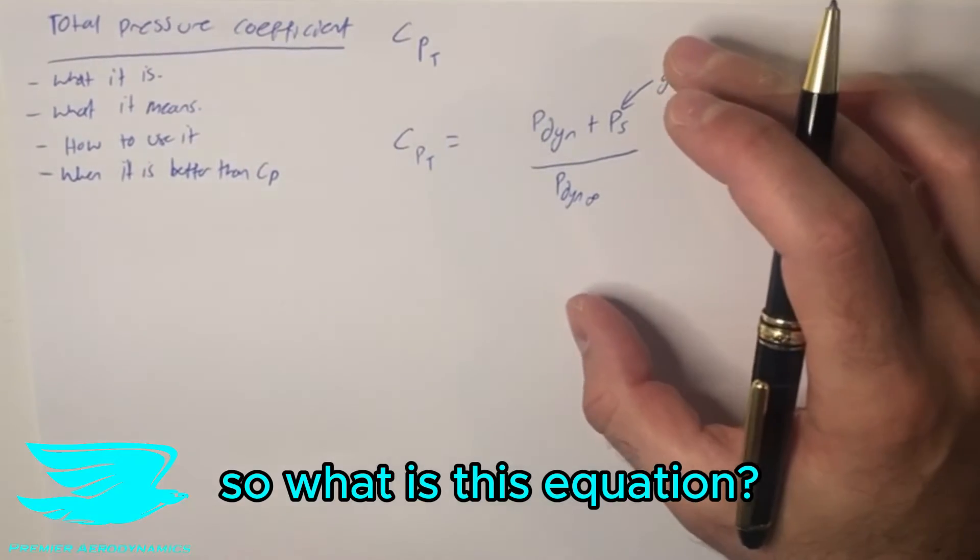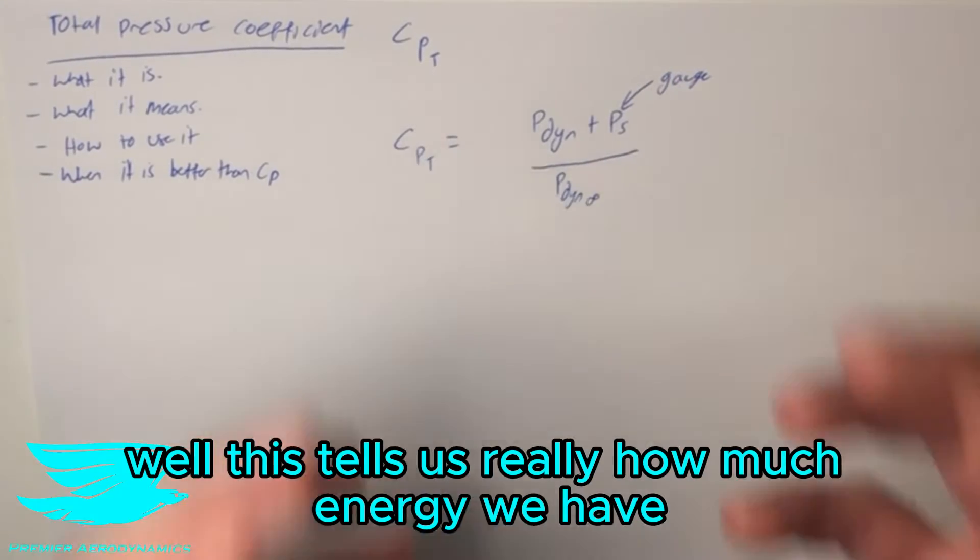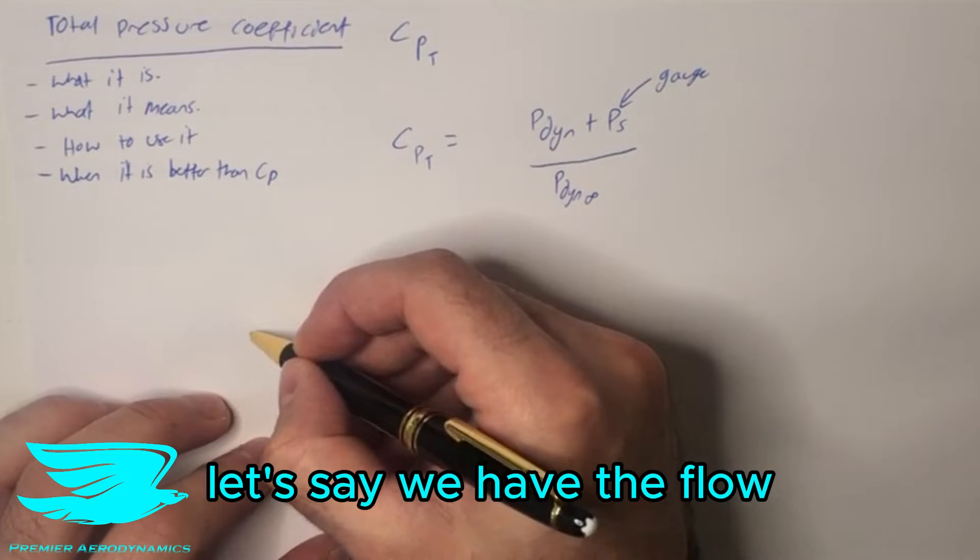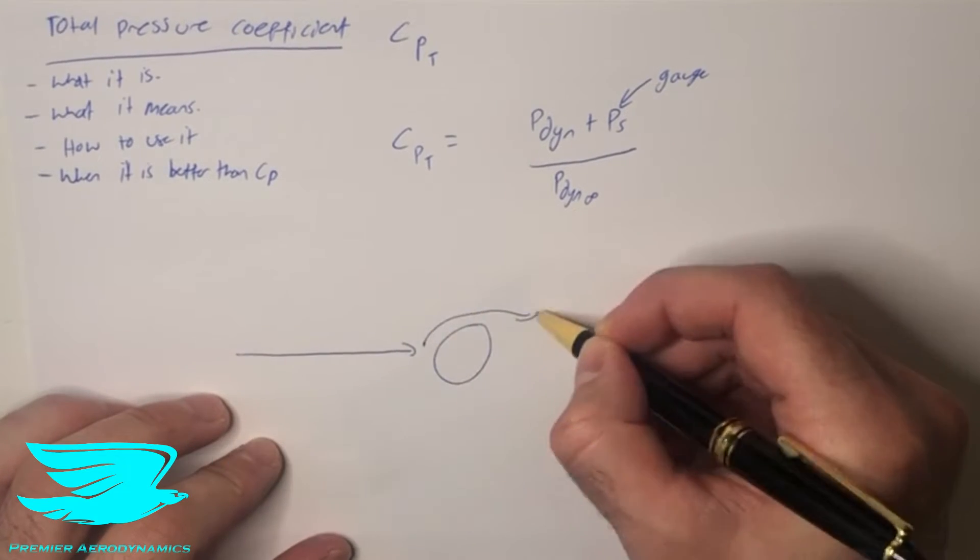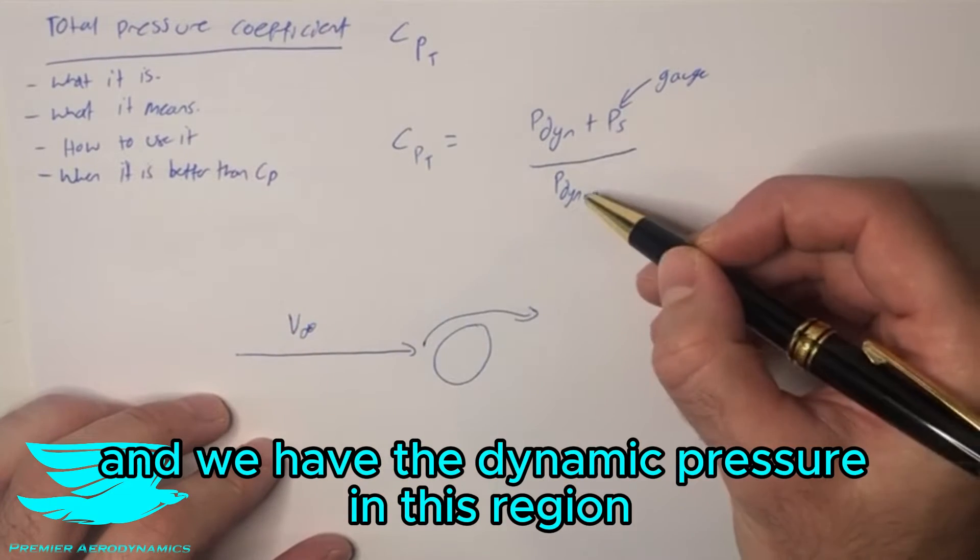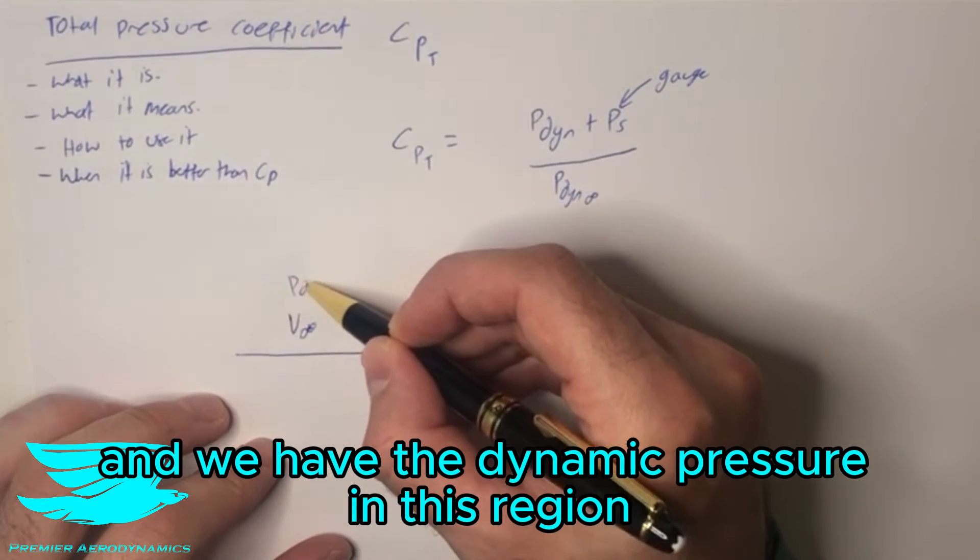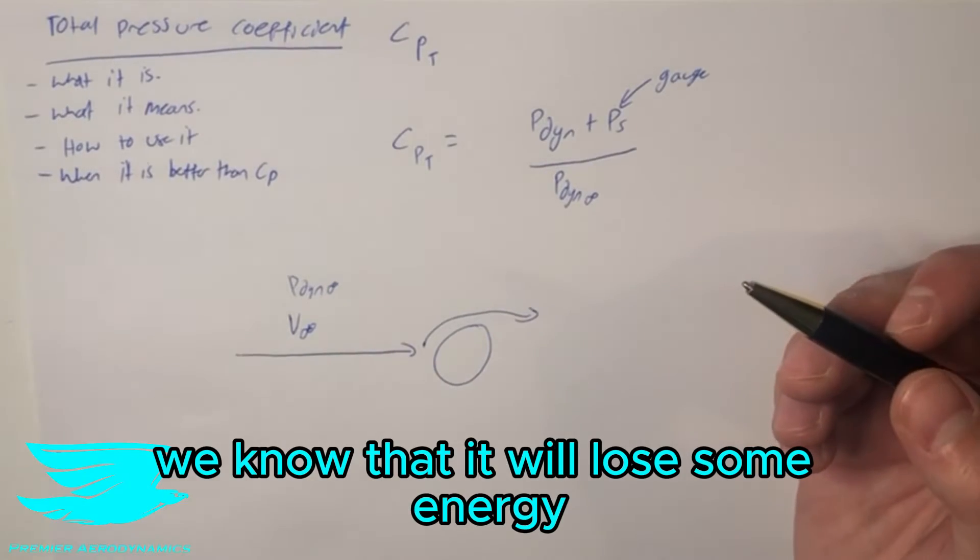So what is this equation? Well this tells us really how much energy we have at one point. Let's say we have the flow, let's say we have an object and the flow coming around the object. We have the free stream velocity here and we have the dynamic pressure in this region. Once it hits the object and goes around we know that it will lose some energy.